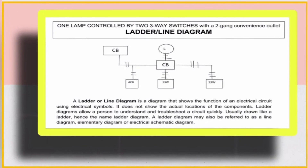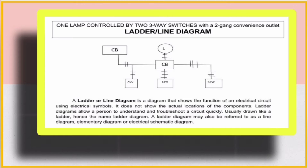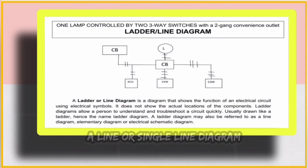The interpretation of picture number two is one lamp controlled by two three-way switches with a two-gang convenience outlet, and the name of this diagram is ladder or line. A ladder or line diagram is a diagram that shows the function of an electrical circuit using electrical symbols. It does not show the actual locations of the components. Ladder diagrams allow a person to understand and troubleshoot a circuit quickly, usually drawn like a ladder, hence the name ladder diagram. A ladder diagram may also be referred to as a line diagram.